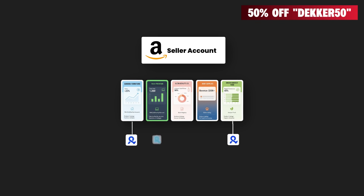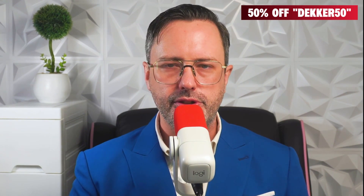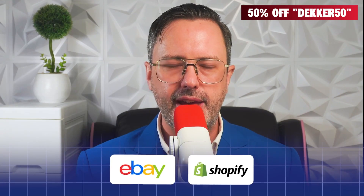Imagine if you had five different Amazon seller accounts, each tied to a different multi-login profile. If your furniture store gets shut down, you'll still have revenue from baby products, electronics, and so on. And your stores in the UK, France, and US could all be opened and managed by teams in Asia without arousing suspicion. This also works for eBay and Shopify.